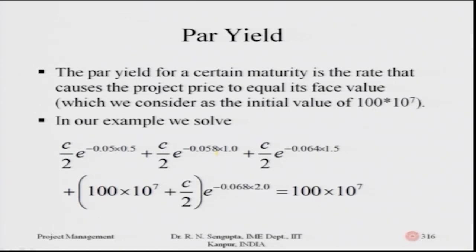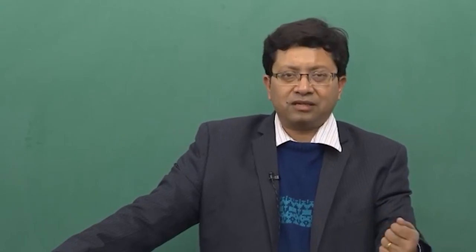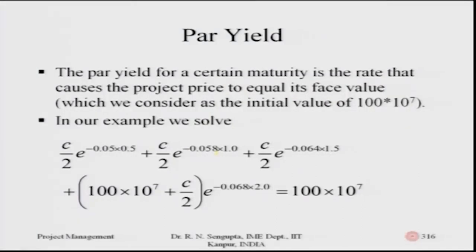Next is the concept of par yield. The par yield for a certain maturity is the rate that causes the project price to equal its face value. Recall that IRR sets net present value to zero, and yield finds Y such that discounted cash flows match market price. Par yield finds the coupon rate C such that the project is priced exactly at its face value — here, hundred crores.